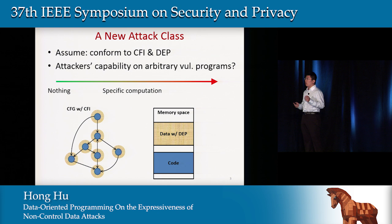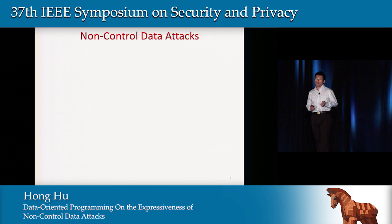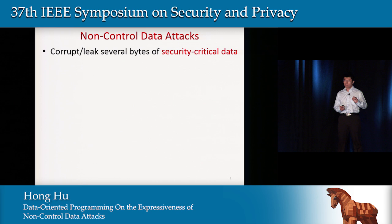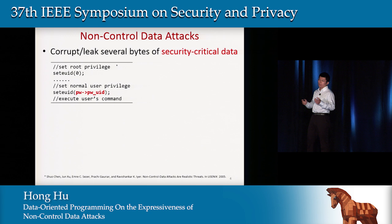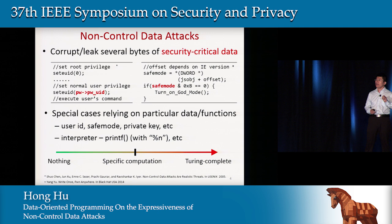Previous work showed that attackers can at least do something specific using non-control data attacks. With these attacks, attackers corrupt or leak several bytes of security-critical data. For example, in this vulnerable code, the code temporarily elevates to root privilege and then downgrades back. But if attackers can corrupt the PWID variable, they can keep root privilege. Similarly, in the IE browser, if attackers can corrupt the safe mode flag, they can silently load arbitrary code into the IE process for execution. These attacks are very severe, but they are special cases relying on particular data — like user ID, safe mode flag, or private key.